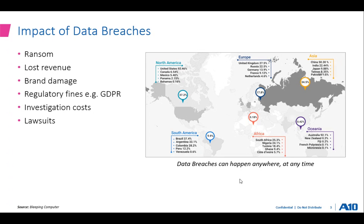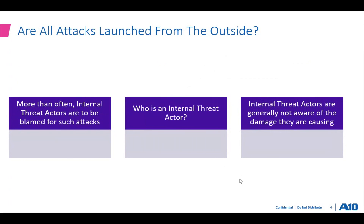Several unprotected databases of Facebook user data were discovered online. The database was found on a server with no password protection in place, meaning it was freely accessible to anyone with an internet connection. This was one of the biggest breaches that occurred. The impact will greatly affect the brand image of an enterprise company.